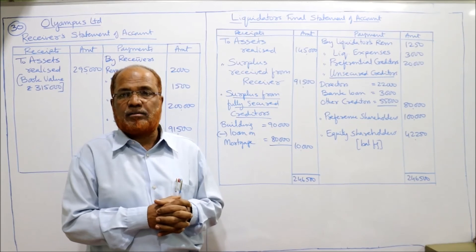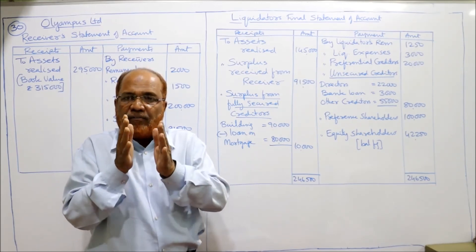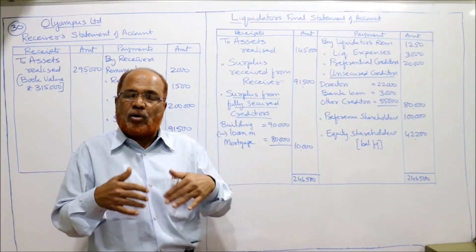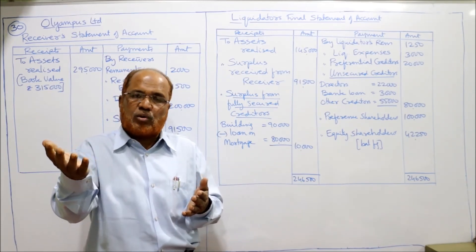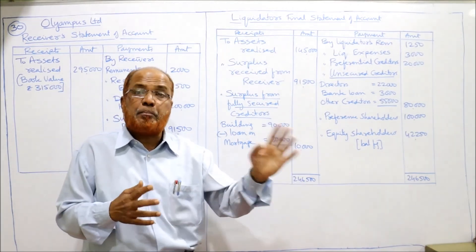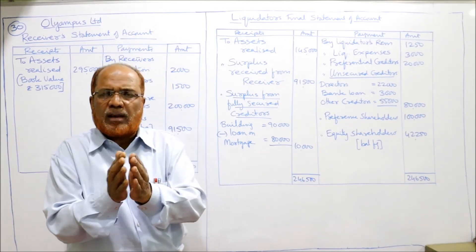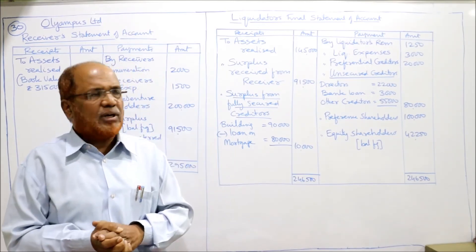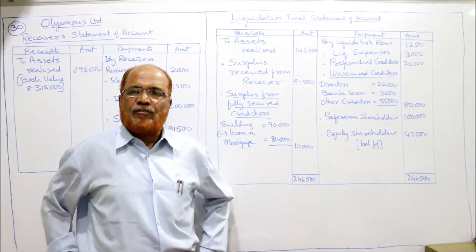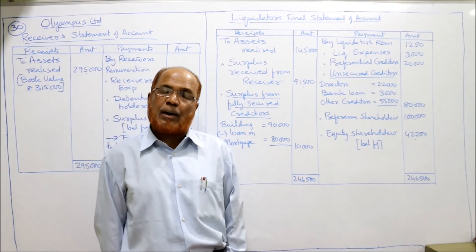We are not calculating any deficiency here, unlike in Problem 29. The reason: in Problem 29 there were different classes of equity shares, so deficiency calculation was needed to determine which shareholders must contribute and which should receive a return. Here there is only one class of equity shares, so all remaining amount — 42,250 — goes directly to equity shareholders. This completes all 30 problems on company liquidation.